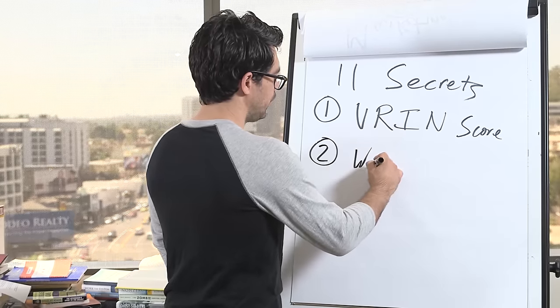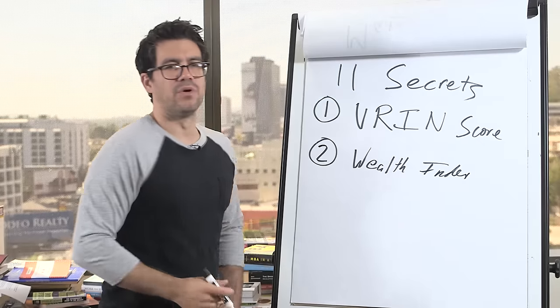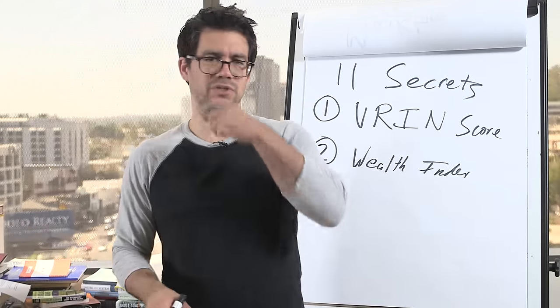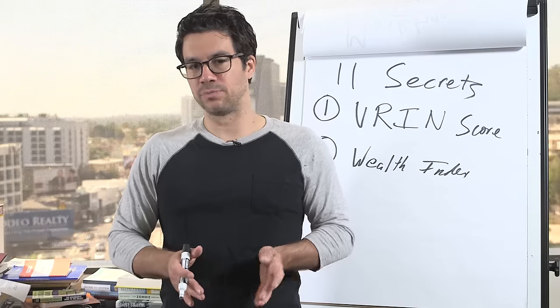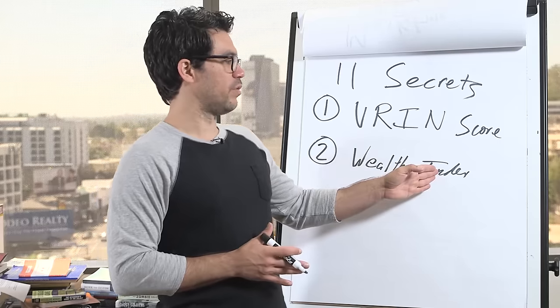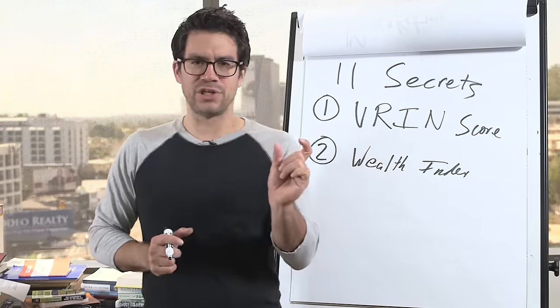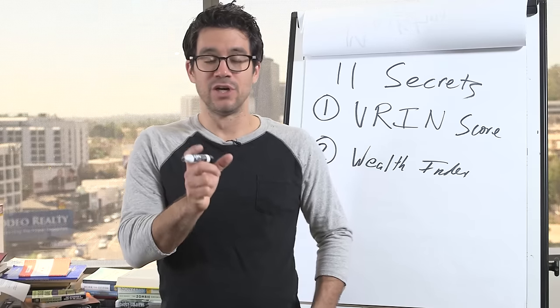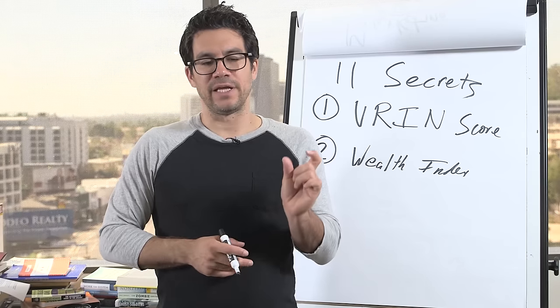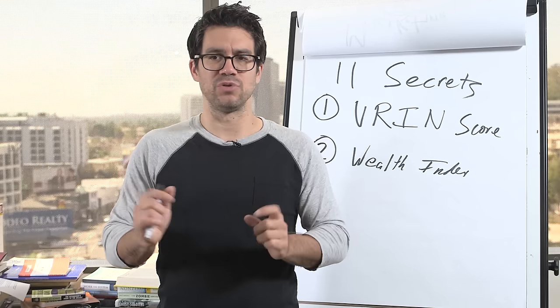Number two, there's a wealth index. A guy did a very famous study and wrote a book called The Millionaire Next Door, where he studied self-made millionaires across the United States. And one of his conclusions was that you can look at people's wealth index. So you basically take your age, it's a factor of your age, your net worth, meaning how much money you have in your bank account and all the things you own minus your debts. And it needs to be at a certain level of the ratio. So it's not an absolute number.